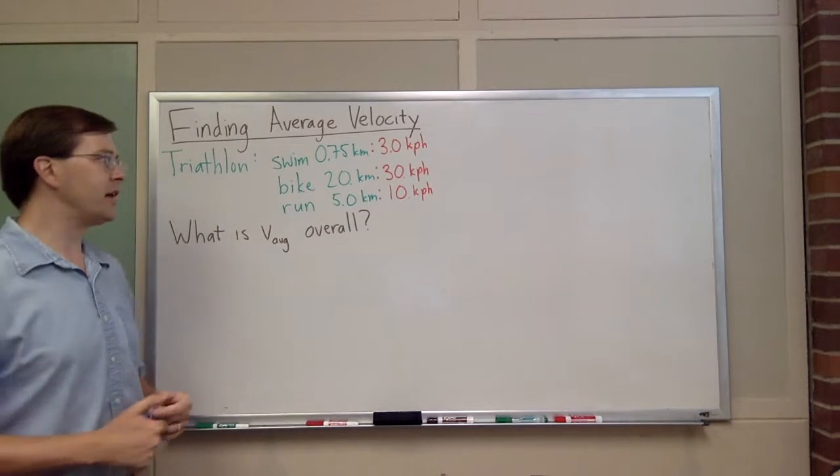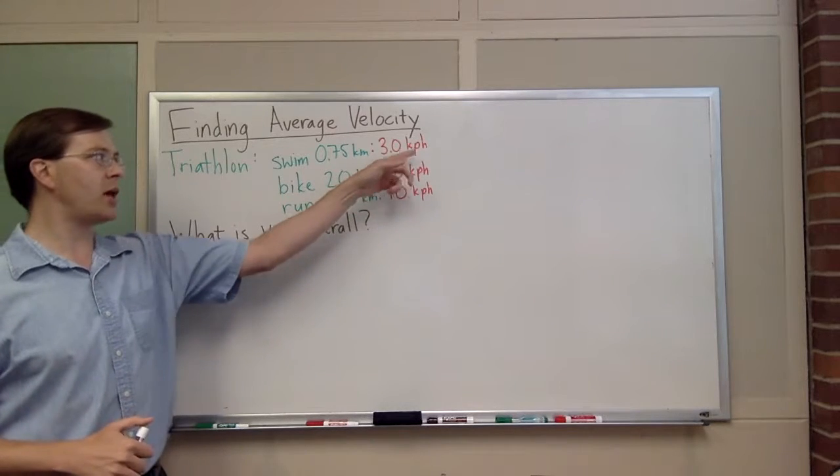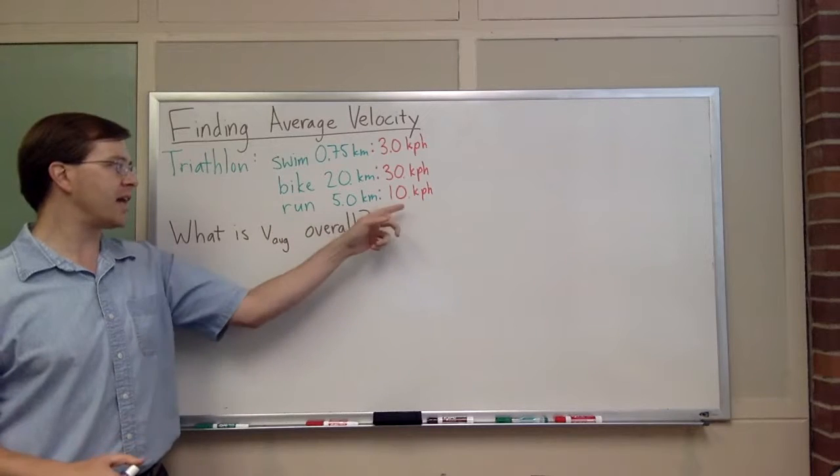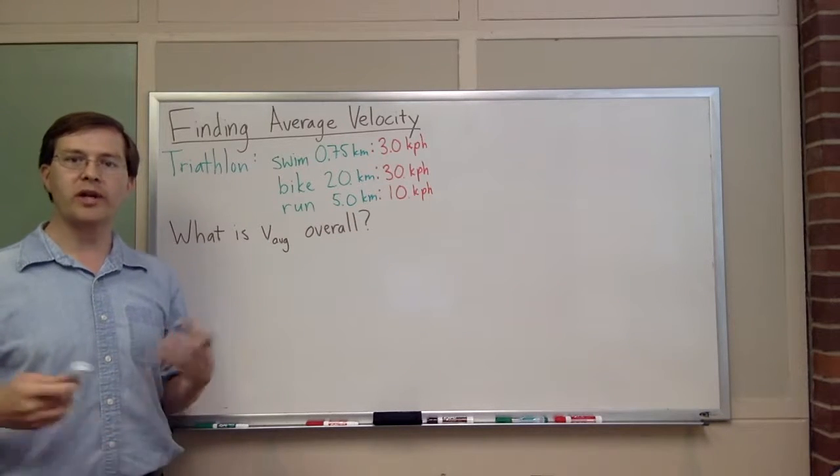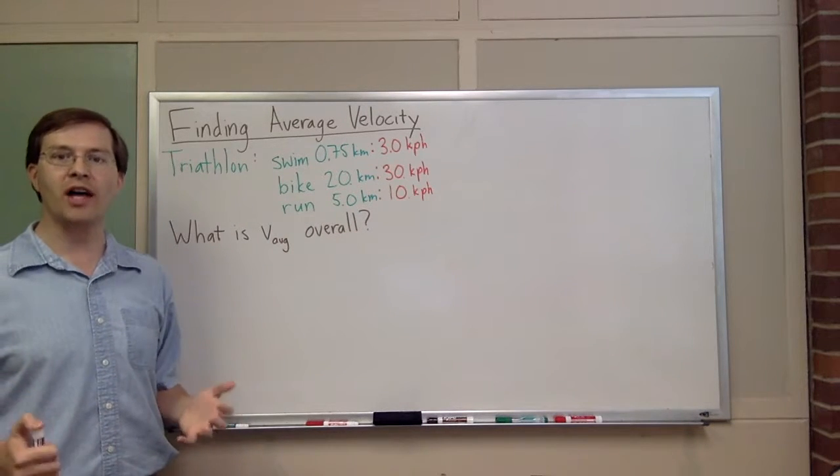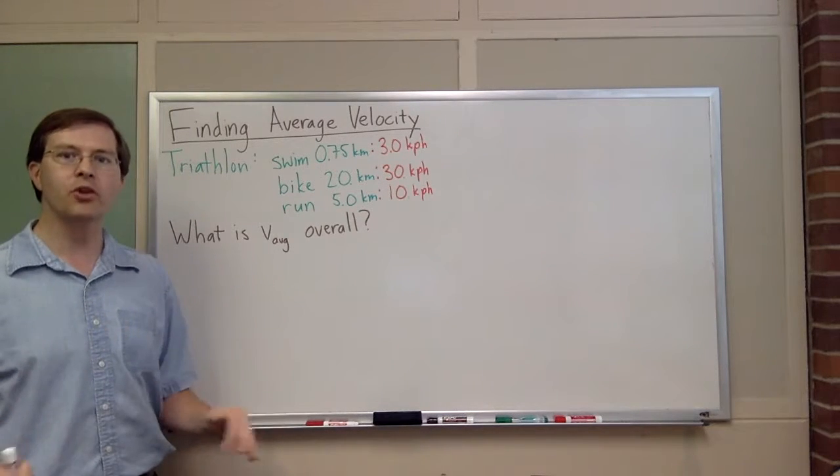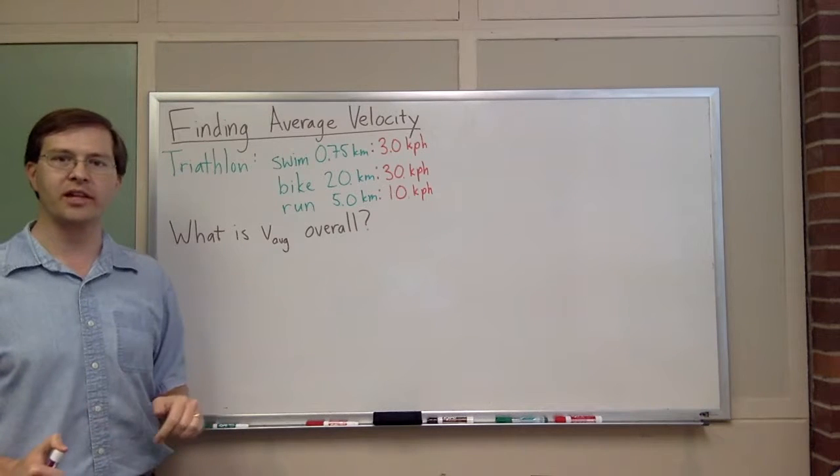I'm going to talk about a triathlete doing a standard triathlon. They're going to swim 0.75 kilometers, bike 20 kilometers, and run 5 kilometers. This particular triathlete averages 3 kilometers per hour swimming, 30 kilometers per hour biking, and 10 kilometers per hour running. Our question is, what is the average velocity overall, ignoring transition times, just average overall velocity for this triathlete.